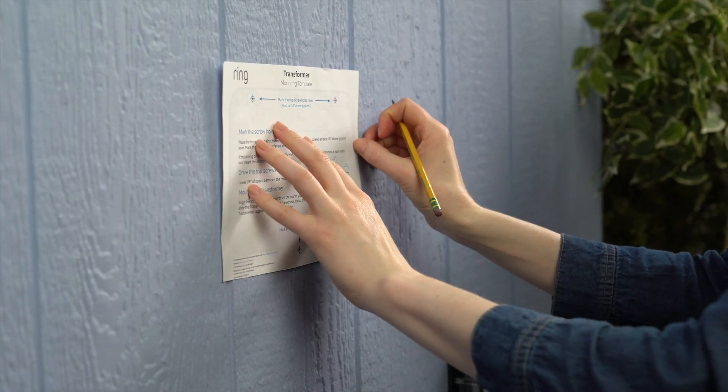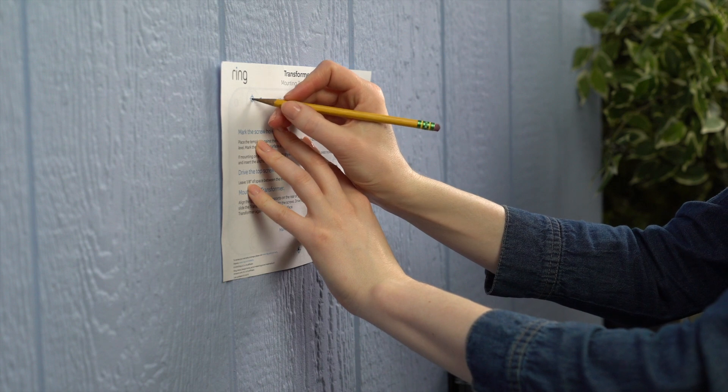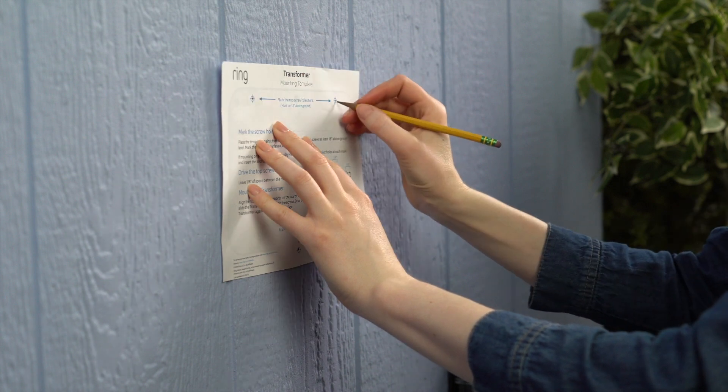Once you've decided on a spot, use the included mounting template to mark the screw holes. To avoid damage to your transformer, make sure the top screws are at least 18 inches above the ground.